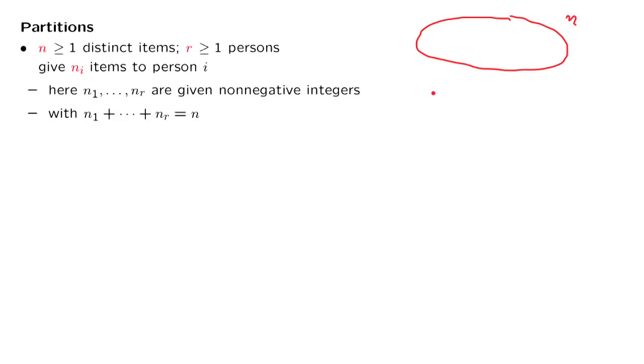And we have r persons. We want to give n1 items to the first person, give n2 items to the second person, and so on. And finally, we want to give n_r items to the r-th person.